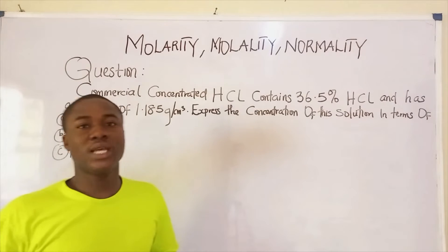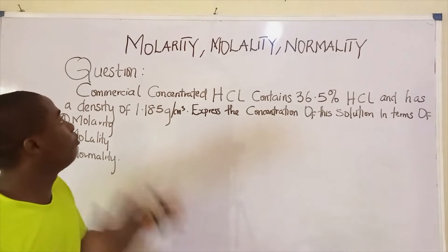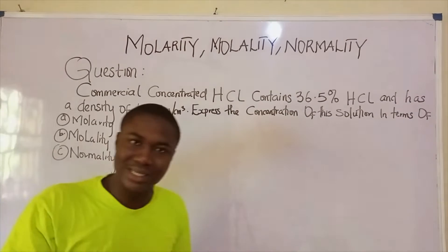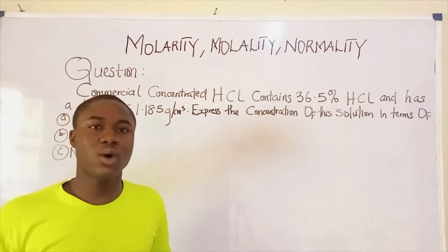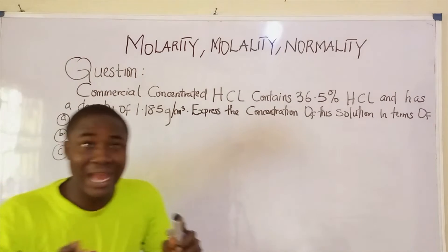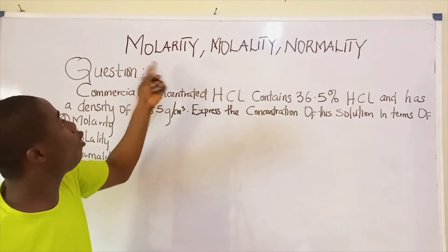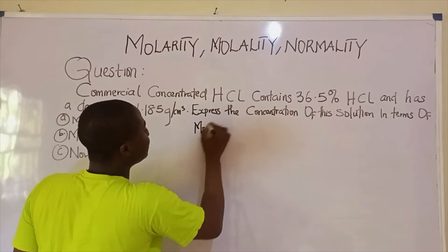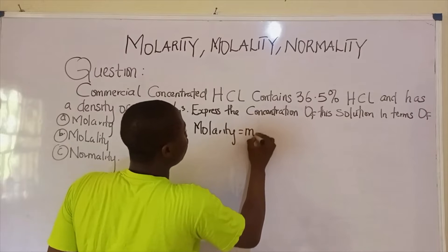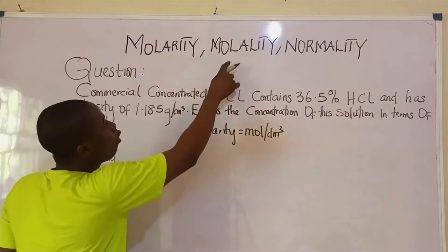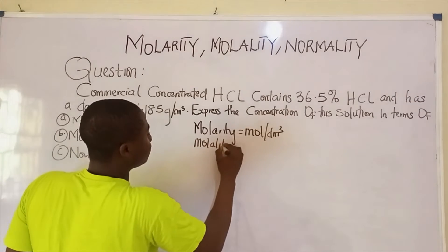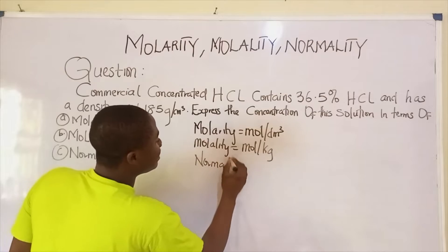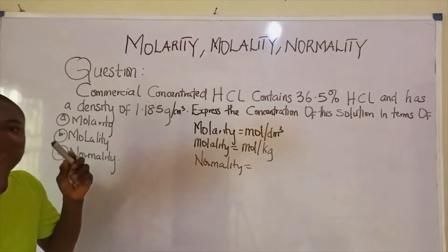Welcome back. In today's lesson I'll be teaching on molarity, molality, and normality, where I'll be solving a practice problem to help us understand these concepts better. First, we must understand that all of these terms are concentration units. Molarity is measured in moles per dm³, molality is measured in moles per kg of solvent, while normality is measured in Normal (N).